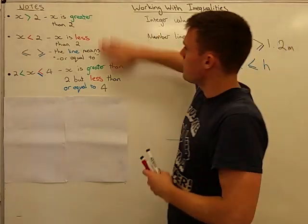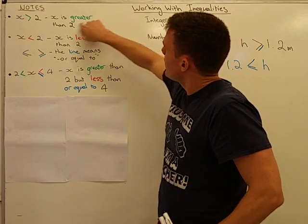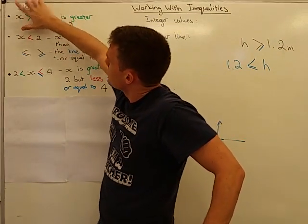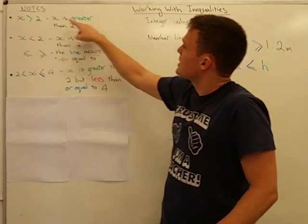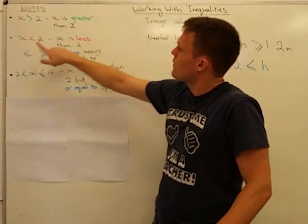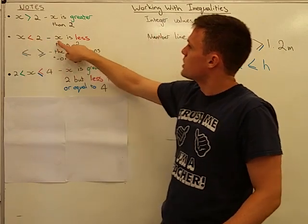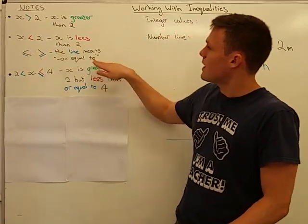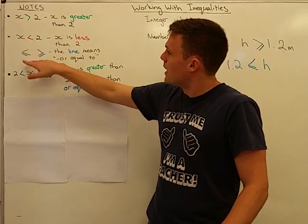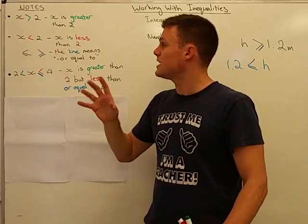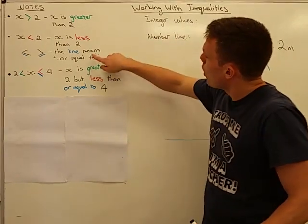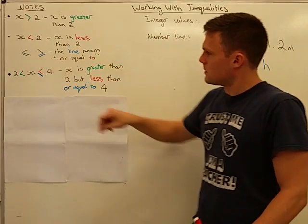So these notes here basically refer to that. If the open mouth is pointing towards the bigger side, well, open mouth always points towards the bigger side. If that's the x, then that's saying that x is greater than 2. However, here you can see the smaller side is pointing towards the x, so therefore x is less than 2. If there's a line underneath here, that means it can be either less than or equal to, or greater than or equal to, but it's the or equal to which is what this line gives it.